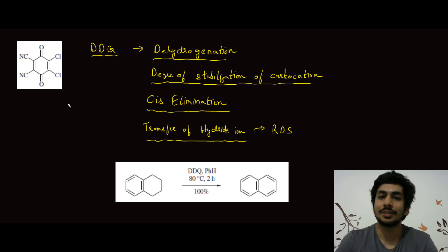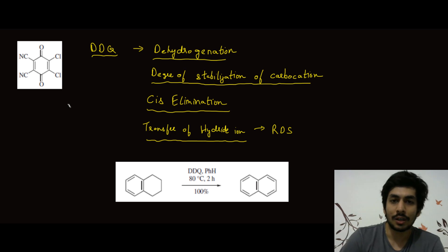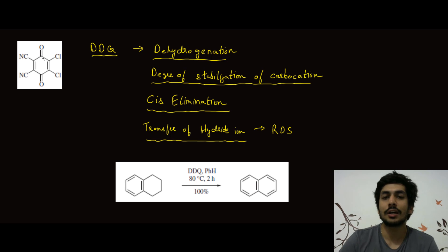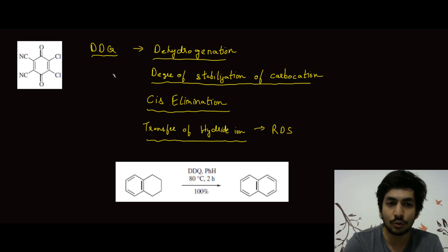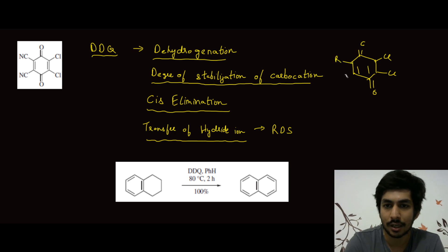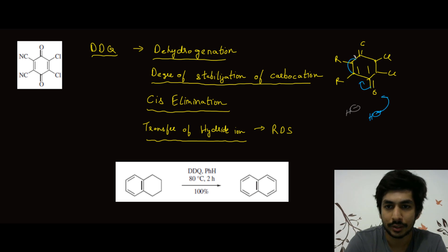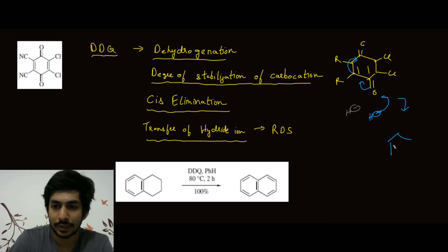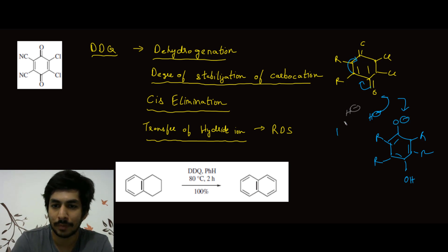DDQ is a very powerful oxidant and it leads to dehydrogenation. Basically, DDQ is hungry for a hydride. Why? Because if you look at this structure — if you add H minus here — this bond migrates over here and this bond migrates over here, and finally you get an aromatic structure. That's why it's a very powerful agent and is hungry for hydride in general. The R groups are two chloro and two cyano, and over here we'll have O minus.